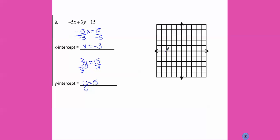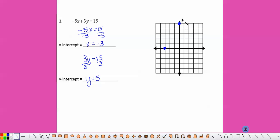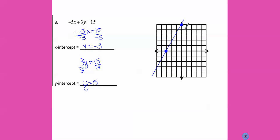Plot x equals negative 3. Plot y equals 5. Ruler to connect the dots. And arrows on the end.